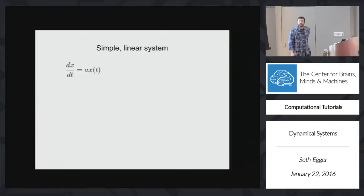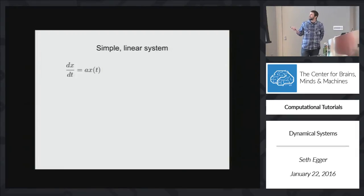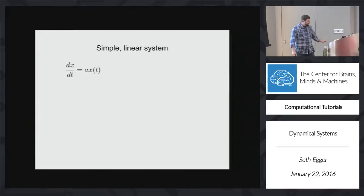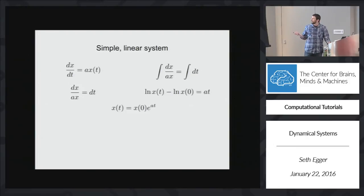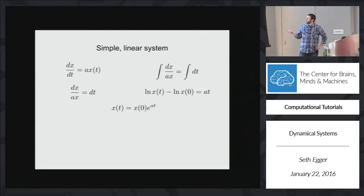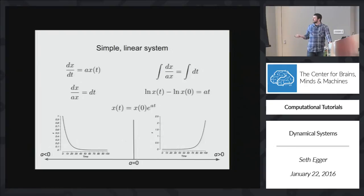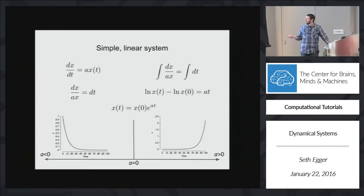So let's examine a really simple system where the change in x over time is equal to some constant a times what x was before. Rearranging with some algebra, we get all the x terms on one side, integrate, and we arrive at a solution: x at some time t is equal to some initial value of x times e to the at. So now this variable a becomes very important. If a happens to be greater than 0, over time this is just going to explode and x goes to infinity. If a is less than 0, x will just decay to some constant value. And of course if a is 0, x won't do much of anything.